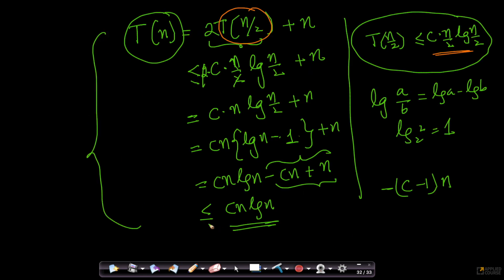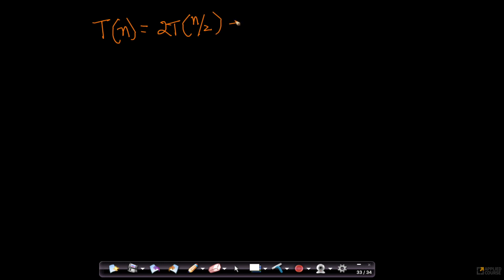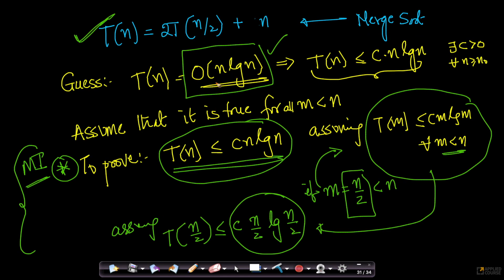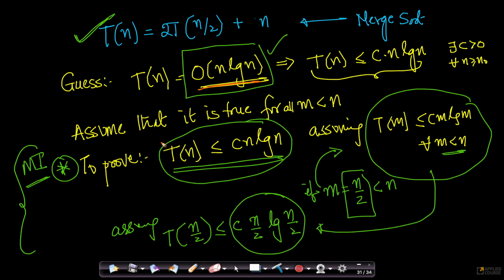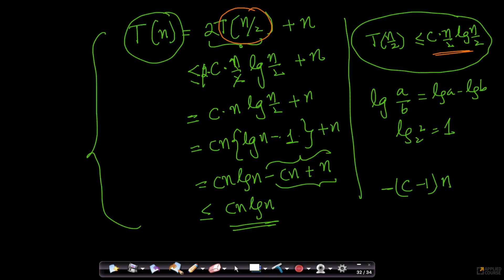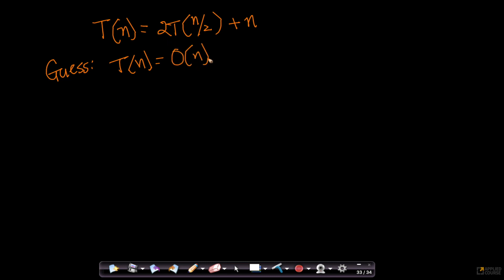Let me show you how you can make mistakes using this same recurrence relation T(n) = 2T(n/2) + n. Suppose instead of guessing O(n log n) correctly, I guessed incorrectly that T(n) is O(n). This implies T(n) ≤ c·n. Let us see what happens when we follow through with this incorrect guess.